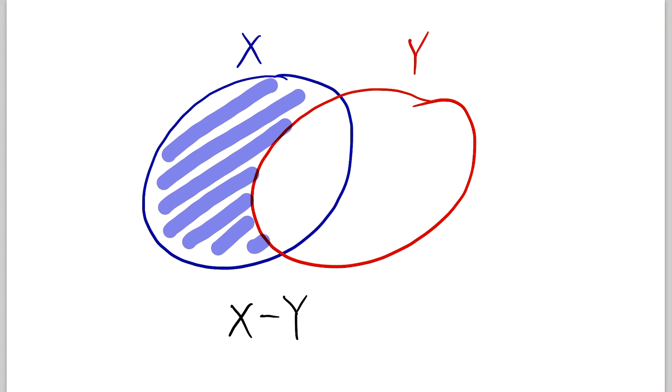This is our visual representation of X minus Y in Venn diagram form. This, of course, is the most basic example, but the idea always stays the same. You've just got to shade the elements of the first set, and then take away everything that's in the set that you're subtracting.